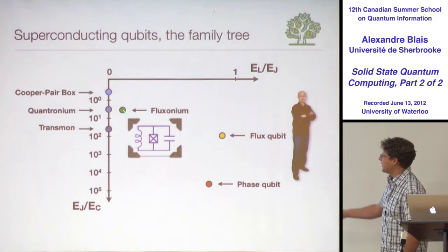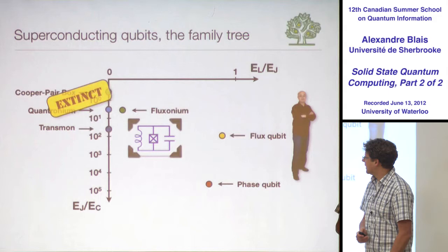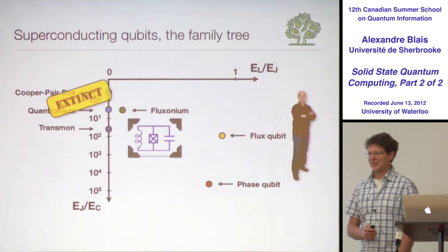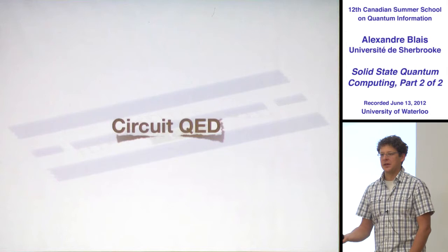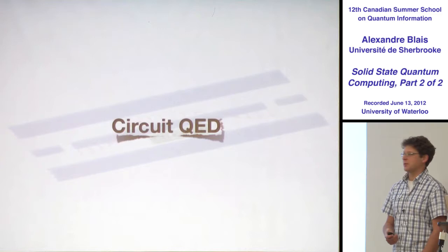I won't have time to talk about all of these qubits; I'll focus on the transmon. These other qubits are now extinct, but we learned a lot from them. That's the end of the first part. The second part is circuit QED. How can you measure these qubits? How can you have more than one? That's the type of questions we'll ask now.